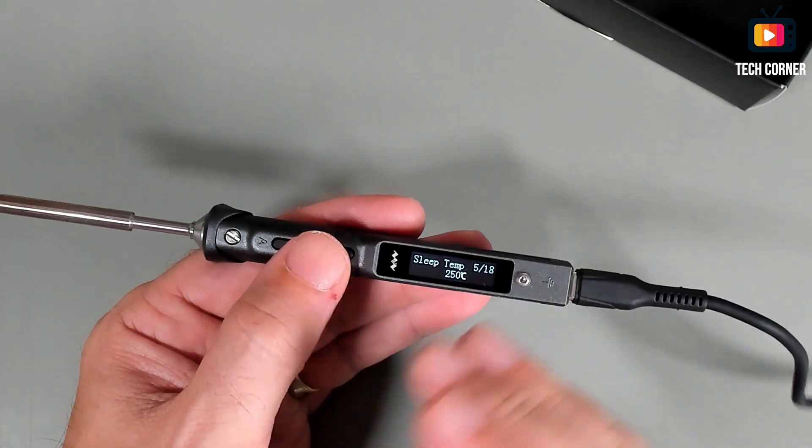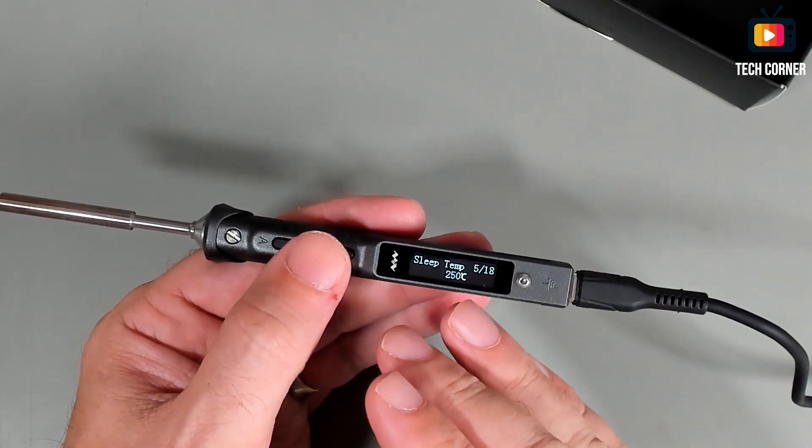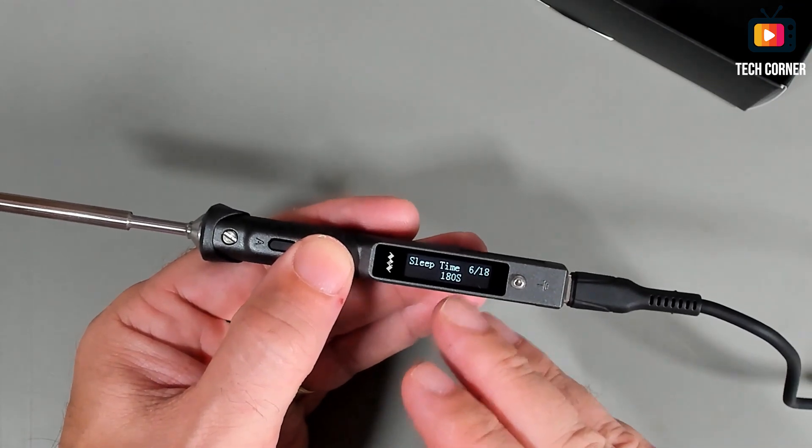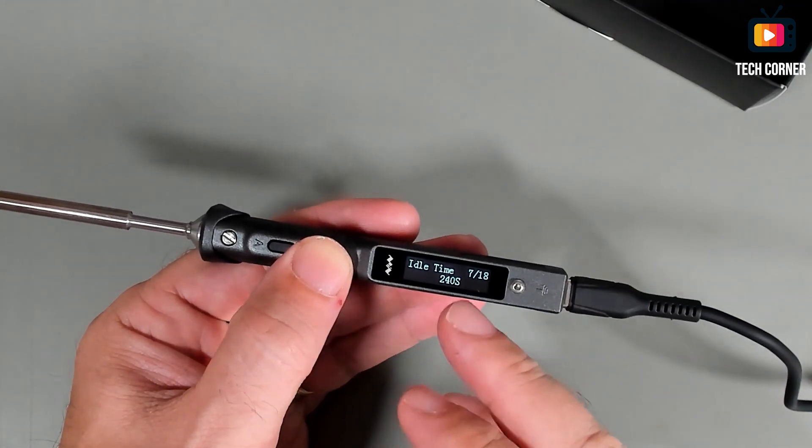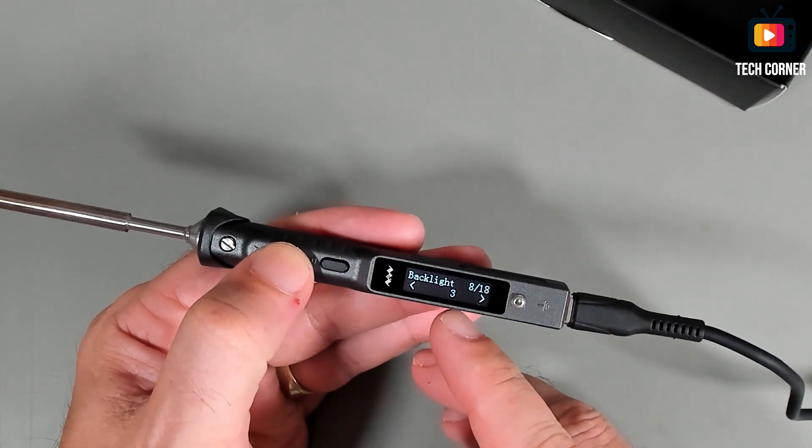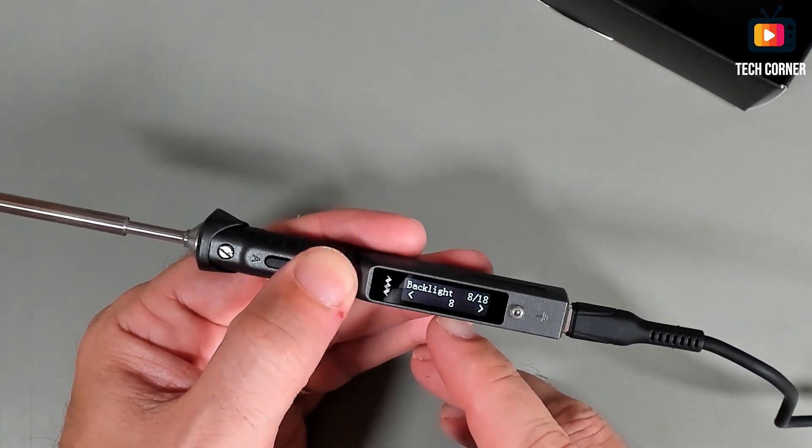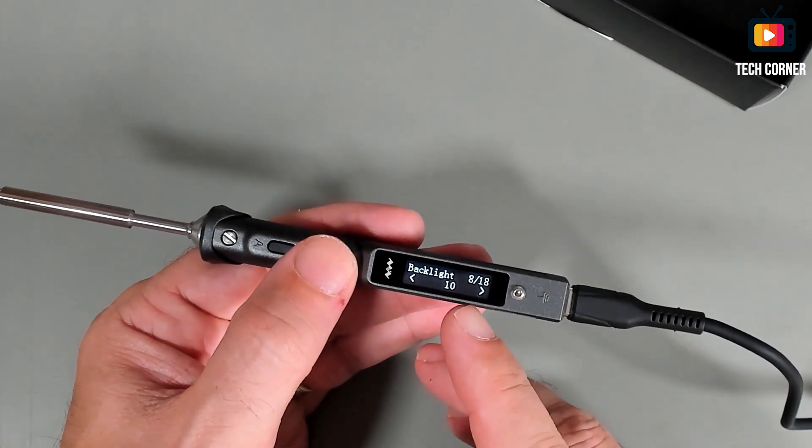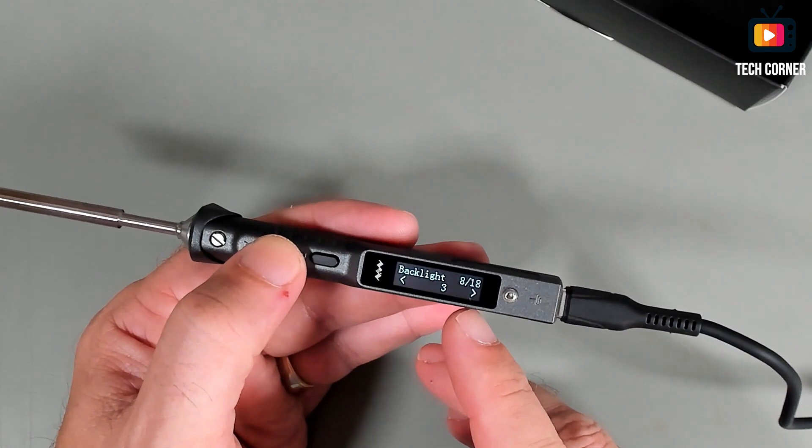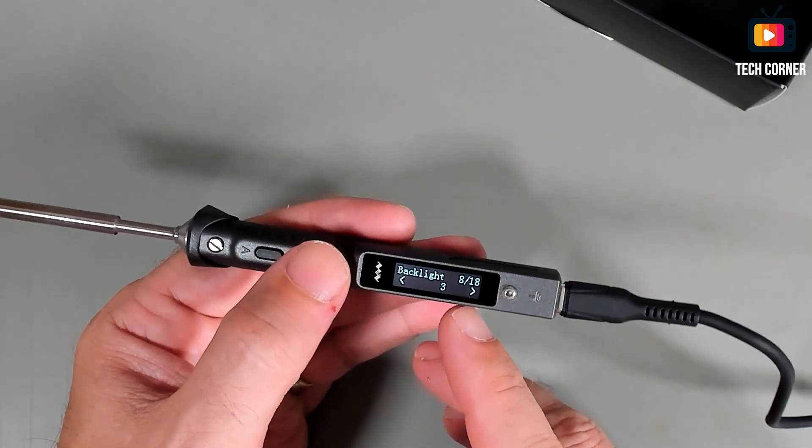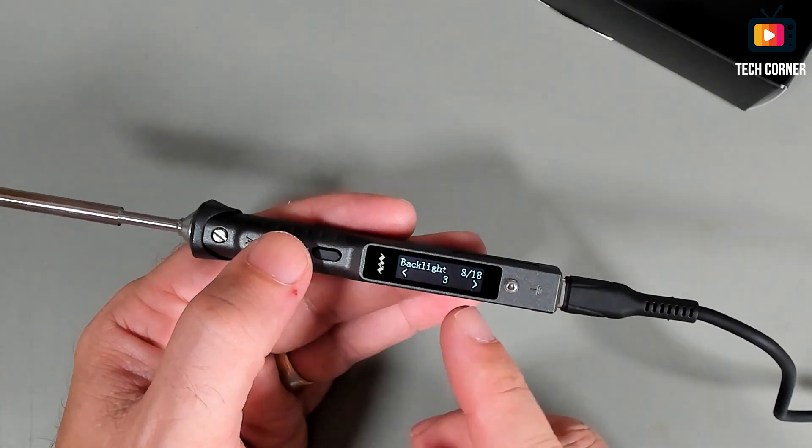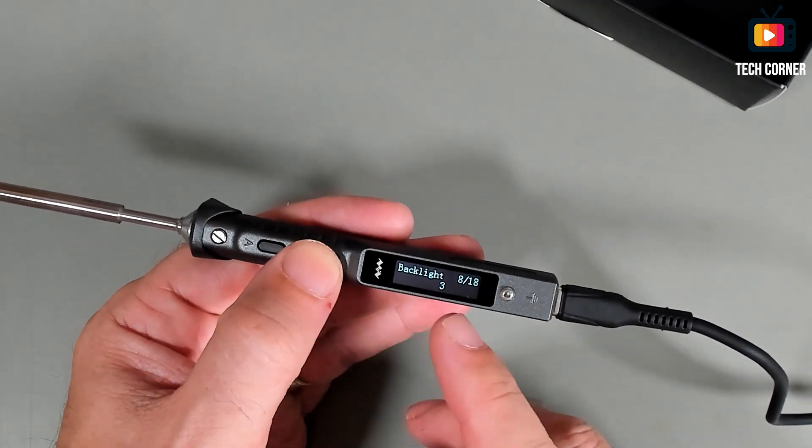You have the sleep temperature. When the soldering iron reaches this temperature, it enters the sleep mode. The sleep time also, the time to enter the sleep mode, idle time. And the backlight also, you can change up to five, I believe, ten, the intensity of the light. Let's put this at five, yeah or three, three is good. Let's wait a bit and we are able to move on.